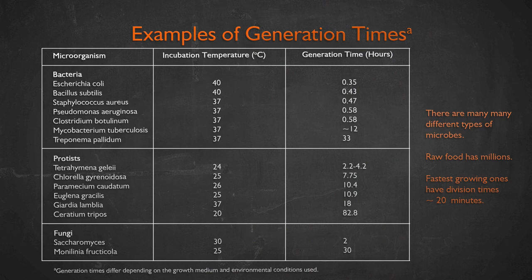Here is a table of the division times of several common bacteria and other microbes. Another particularly relevant division time for cooking is that of yeast, Saccharomyces cerevisiae, which has a division time of about two hours. There will therefore be far fewer yeast cells in 12 hours than there would be Salmonella.